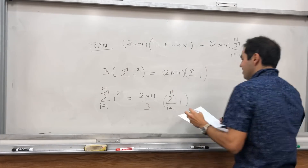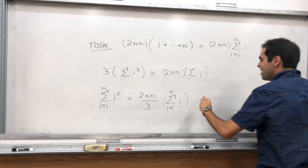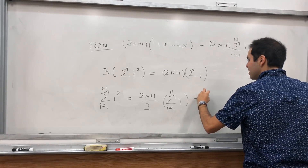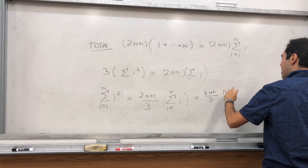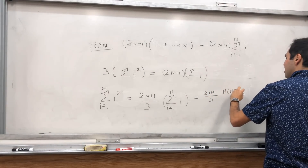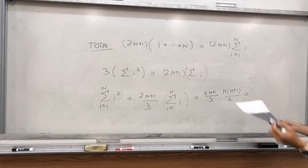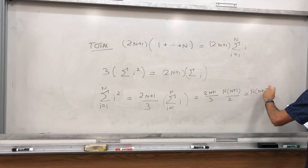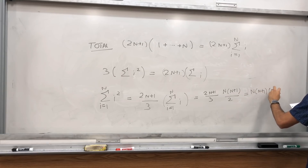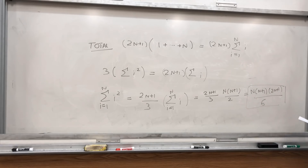And the sum of the integers from 1 to n is n times n plus 1 over 2. So the sum of i squared is (2n plus 1) over 3, times n times (n plus 1) over 2. Multiply it all together and you get precisely n times n plus 1 times 2n plus 1 over 6.